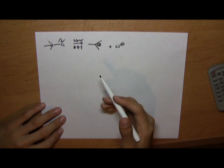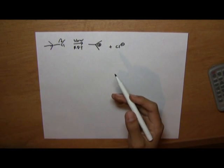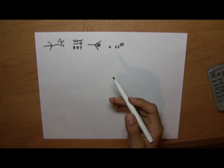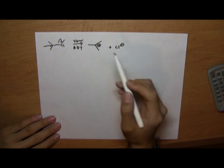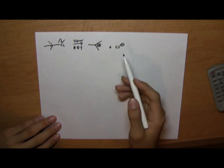The difference between E1 and SN1 lies in the second step, in which instead of the nucleophile attaching to the carbocation, it attacks a beta carbon for a hydrogen.